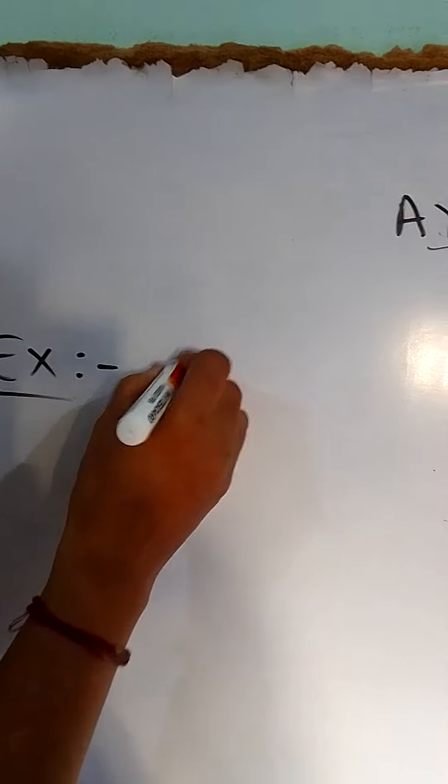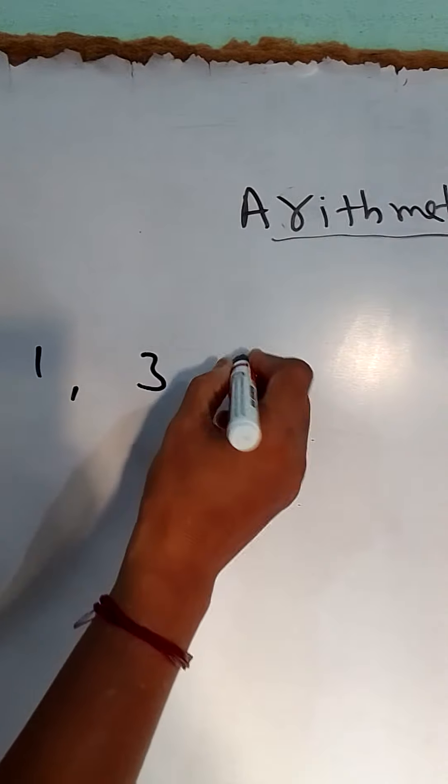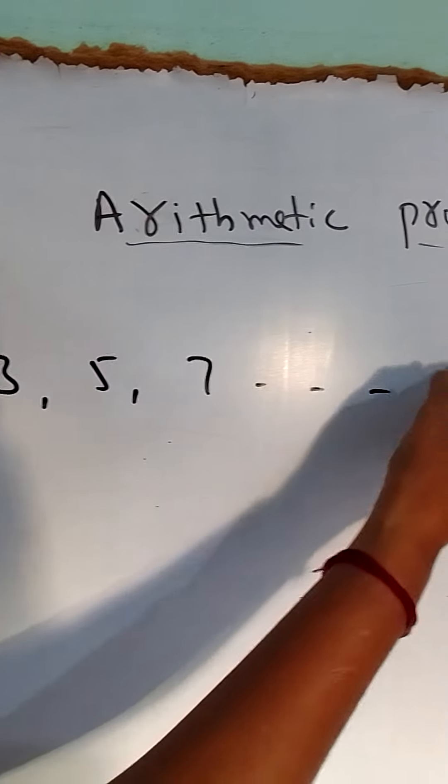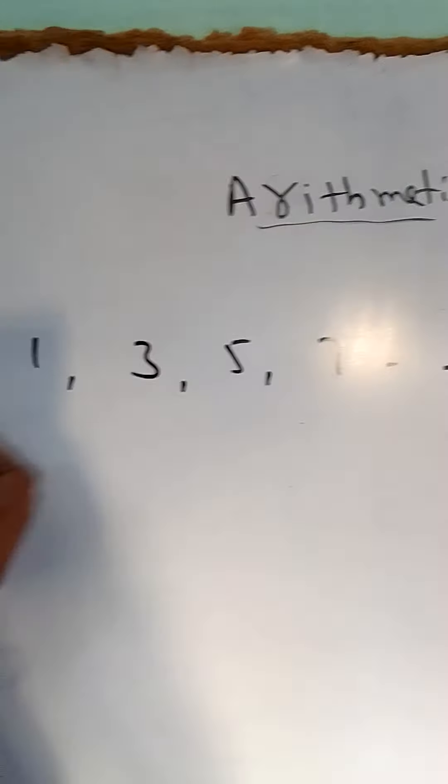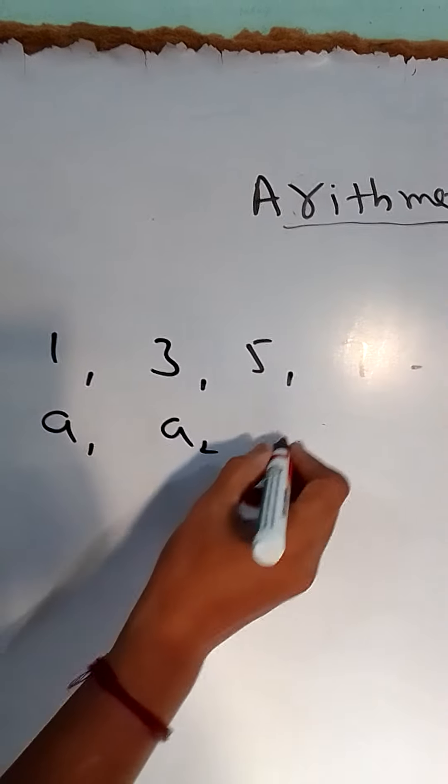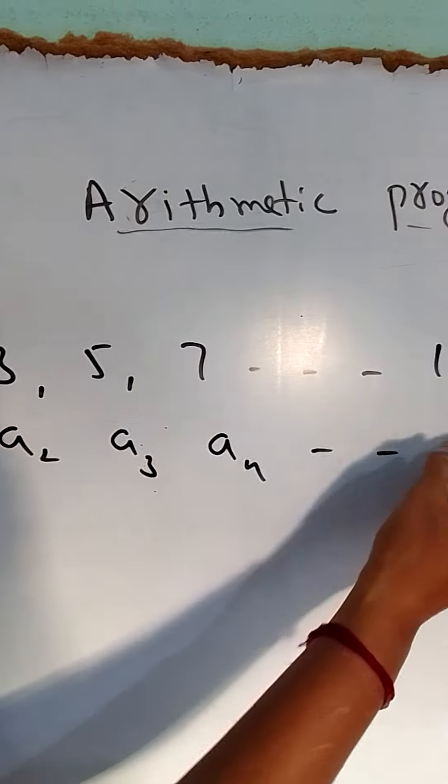1, 3, 5, 7, and so on up to n terms. Here, these are labeled as a₁, a₂, a₃, continuing to aₙ.